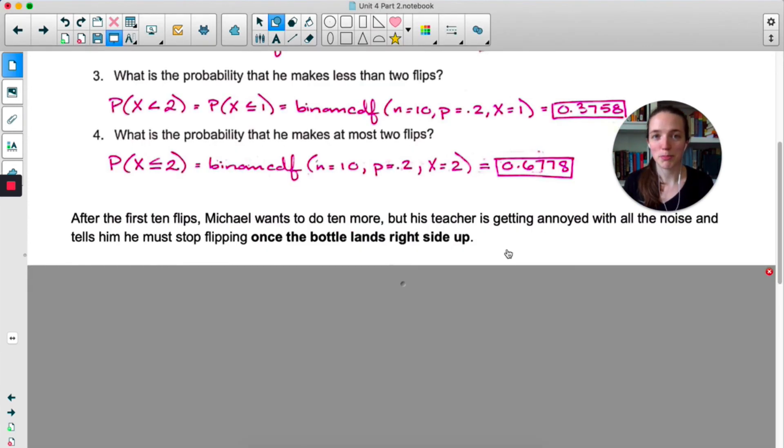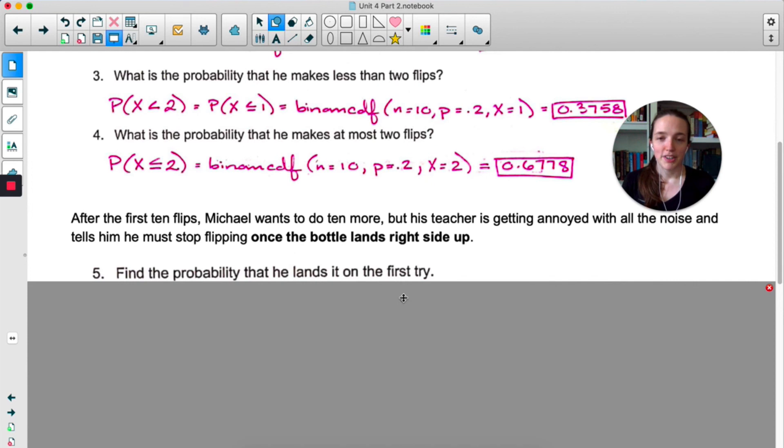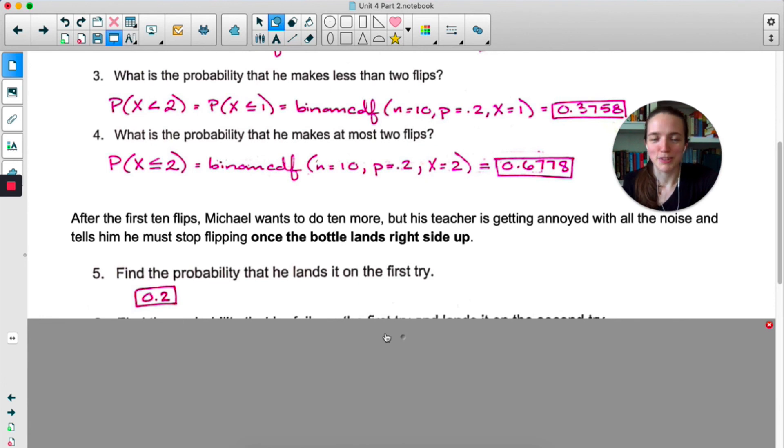Now remember, Michael is practicing for this ill-advised talent show performance during statistics. So his teacher is definitely getting annoyed with the sound of a bottle flipping. Yeah, it's really annoying. She tells him that he has to stop it once the bottle lands right side up, which if she knew how bad he was at it, she probably wouldn't have said that. So the probability that he lands it on the first try. That one's really easy. It's just 20%. 20% chance of landing.